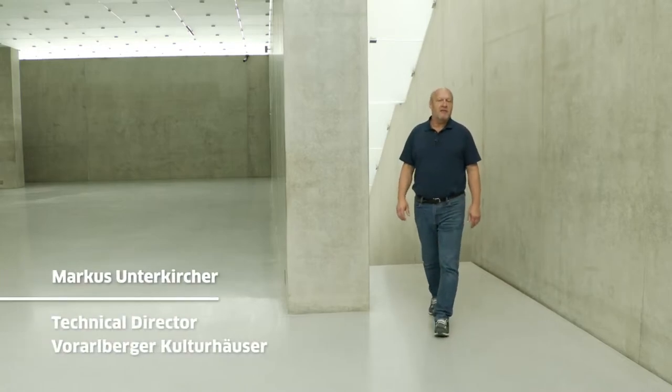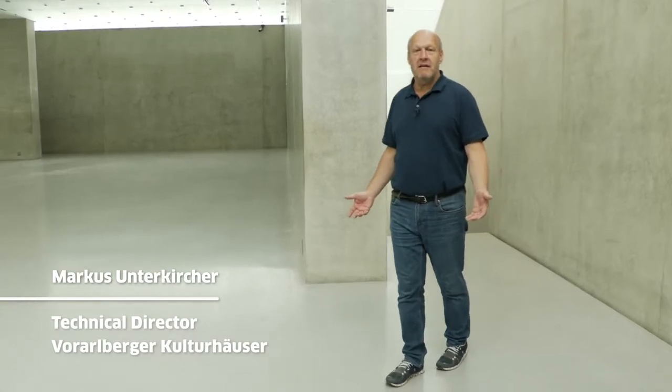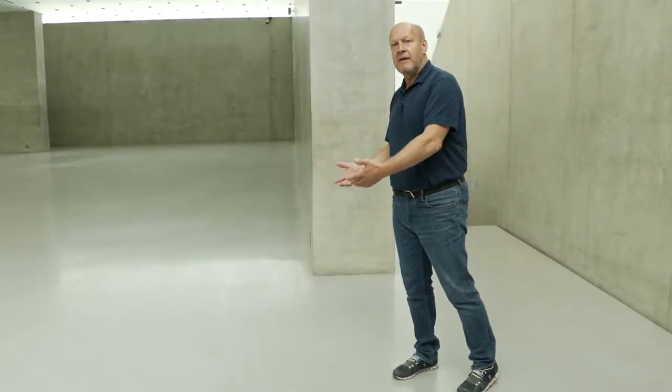The Kunsthaus Bregenz has a square layout, but only three load-bearing walls. These supporting walls are located inside the building.